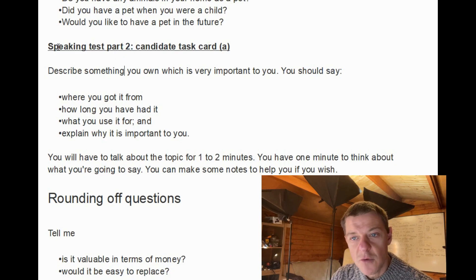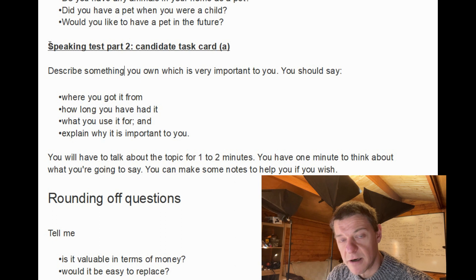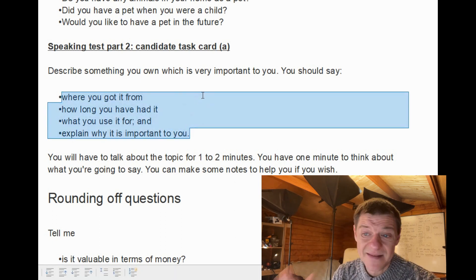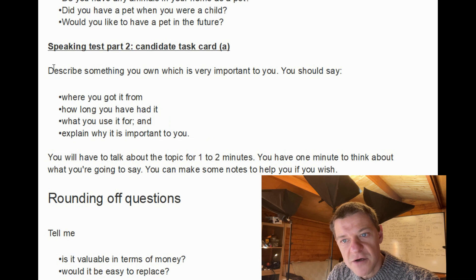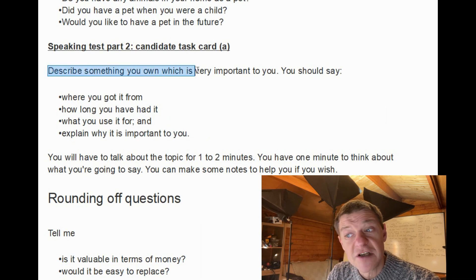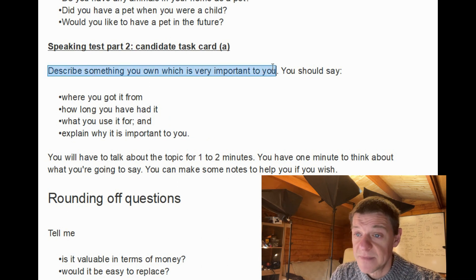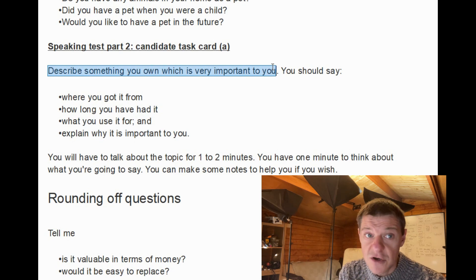Okay, Part 2. You will be given a topic card with several questions - actually, they're not even questions, they're instructions for what you must talk about. We're going to look at a card where you must talk about something which is very important to you. You have to describe something that you own.